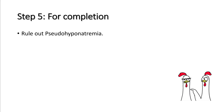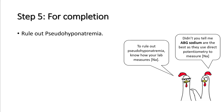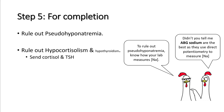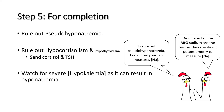Step five is for completion: rule out pseudohyponatremia. Make sure you know how your lab measures sodium levels, and in case of doubt, check sodium from an ABG machine which uses direct potentiometry. Also rule out hypocortisolism and hypothyroidism by checking serum cortisol and TSH, and watch for severe hypokalemia as it can result in hyponatremia.